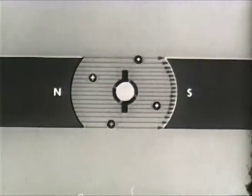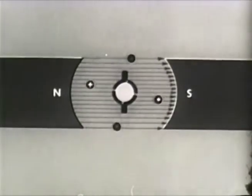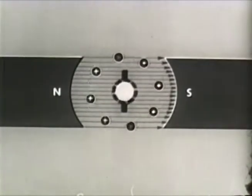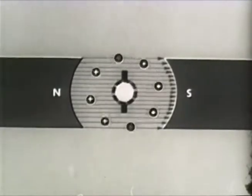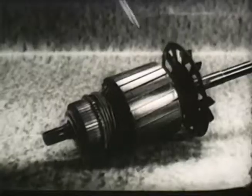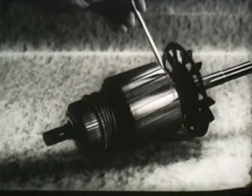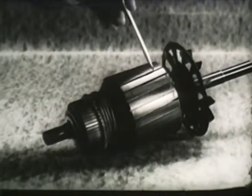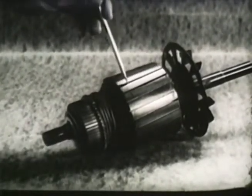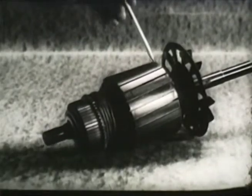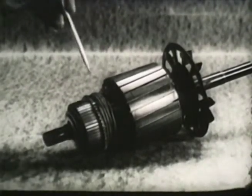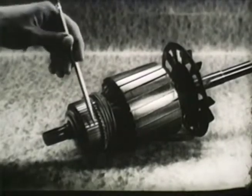As one commutator segment has moved away from the brushes, another now takes its place and the movement continues. The greater the number of loops in the armature, the smoother its motion. For this reason, rotors in practical DC motors have many loops. Since current in the rotor loops must reverse each half cycle, two commutator segments per loop are required.